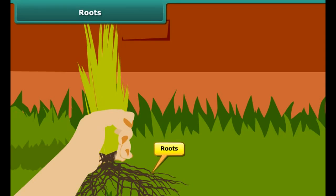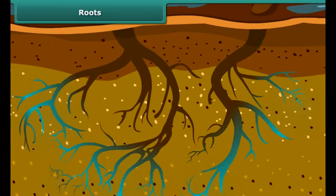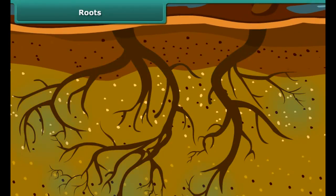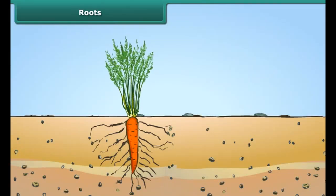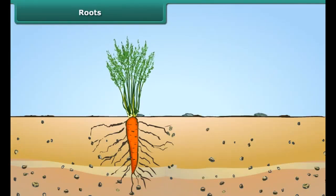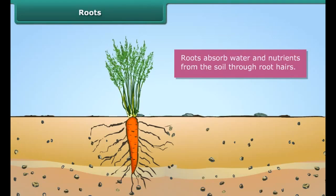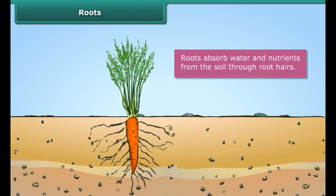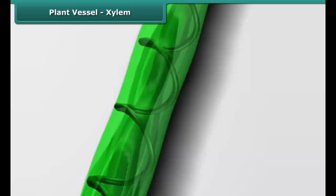All plants have roots. Roots play a crucial role in providing water and nutrients to the other parts of the plant body. Roots have hairs. Roots absorb water and nutrients from the soil through these hairs. The more root hairs a plant has, the greater the absorption.